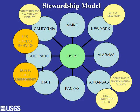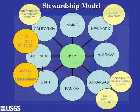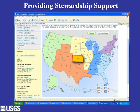We maintain the National Hydrography Dataset through a stewardship process where states have joined with the USGS to keep the NHD up to date. We currently have 35 states in our stewardship network, with the USGS acting as facilitator. Other organizations such as the U.S. Forest Service, Bureau of Land Management, and city agencies work through their respective states. You can go to a web map, click on a state, and find out who to contact to maintain the NHD.